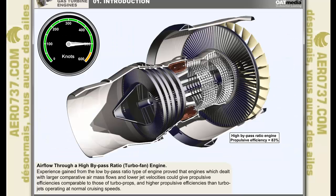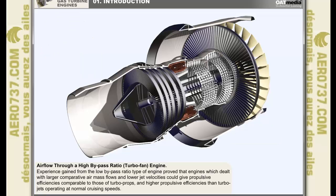The experience which was gained by manufacturing and operating the low bypass ratio type of engine proved that engines which dealt with a larger comparative air mass flow and lower jet velocities could deliver propulsive efficiencies comparable to those of turboprops and indeed a higher propulsive efficiency than turbojets operating at normal cruising speeds. The advent of the fan jet engine had arrived. This model of a triple spool front fan turbojet engine shown here represents probably the most successful early example of this type of engine, the Rolls-Royce RB211.